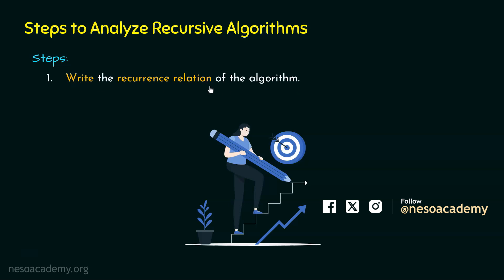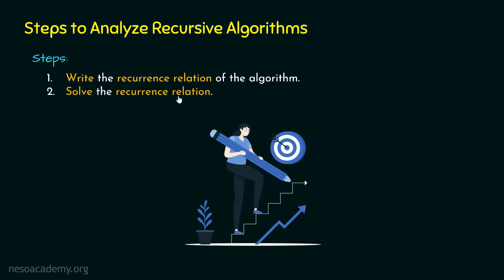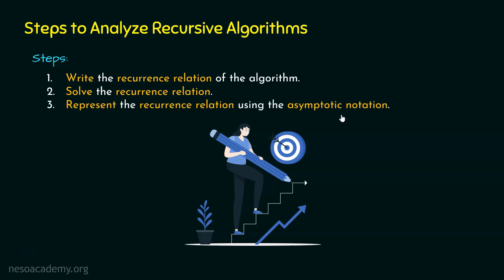We first need to convert our recursive algorithm to its equivalent recurrence relation. After writing the recurrence relation, we need to solve it using one of the methods available. We will learn those methods as we proceed in this chapter. The third step is to represent the recurrence relation using the asymptotic notation. These are the steps involved in analyzing recursive algorithms. We can find the time complexity, the return value, even the space complexity, and the number of operations easily by following these steps.